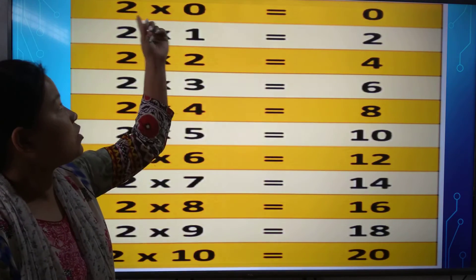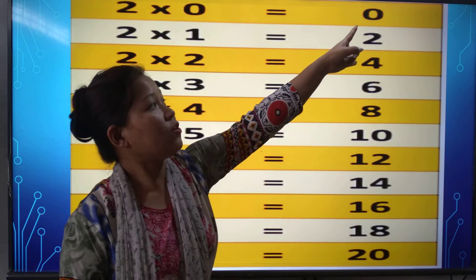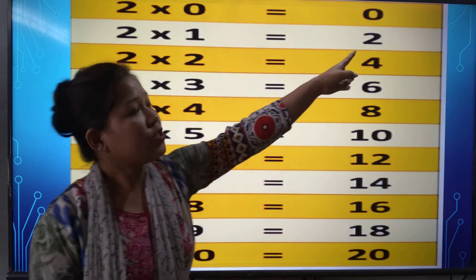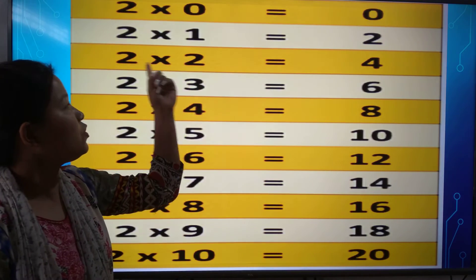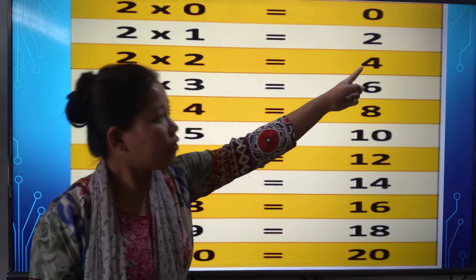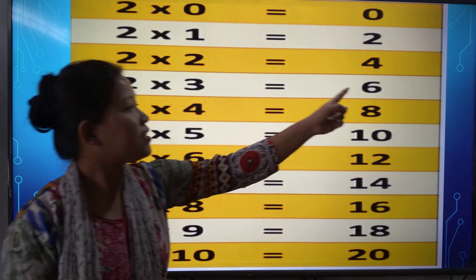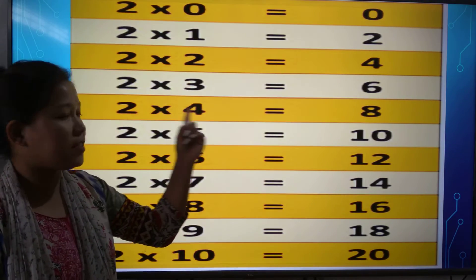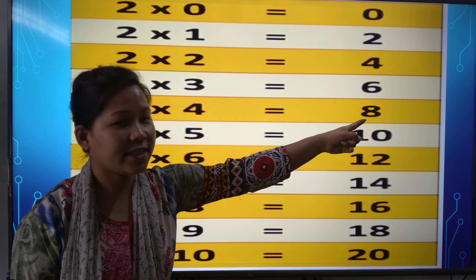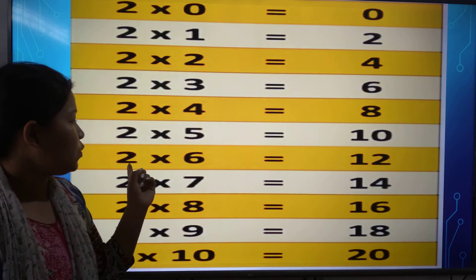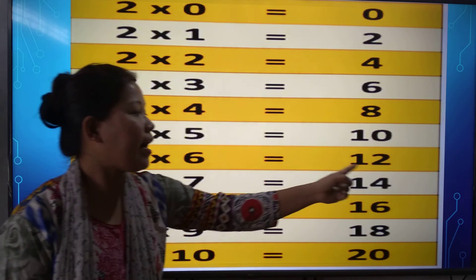Again repeat with me. 2 0s are 0. And 2 1s are 2. 2 2s are 4. And 2 3s are 6. 2 4s are 8. 2 5s are 10.